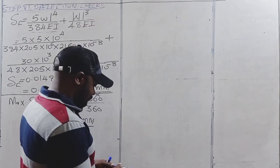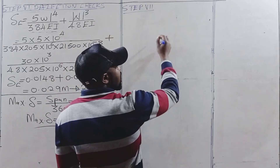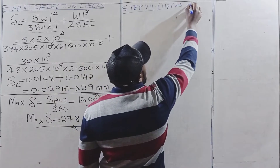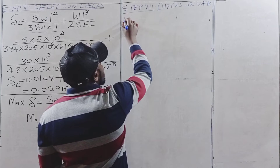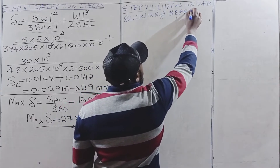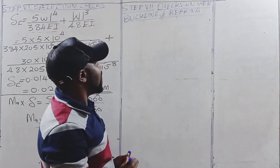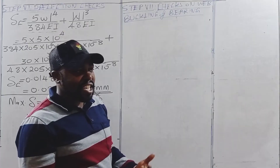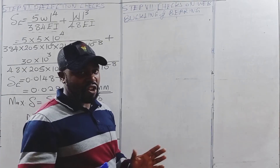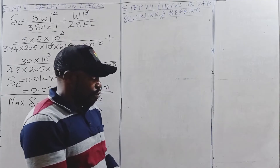Step number seven is checks on web bearing and buckling. The reason this check must be carried out is to determine whether the section requires web stiffeners, which stiffen the web, preventing sway, buckling, or any movement. We need to check whether this section requires provision of web stiffeners.